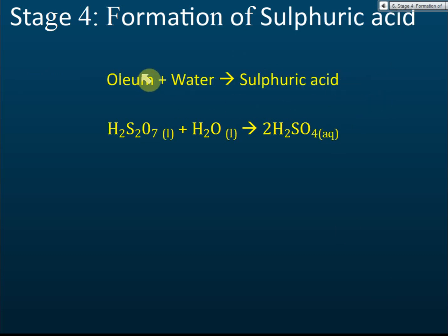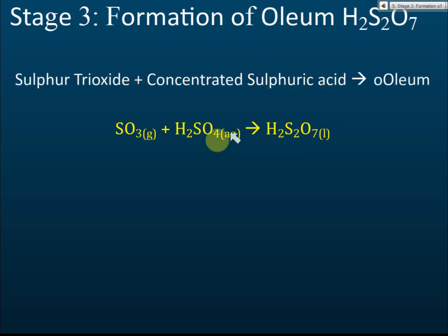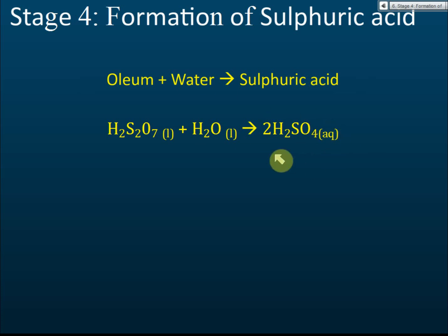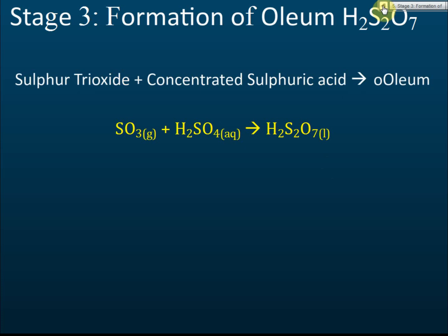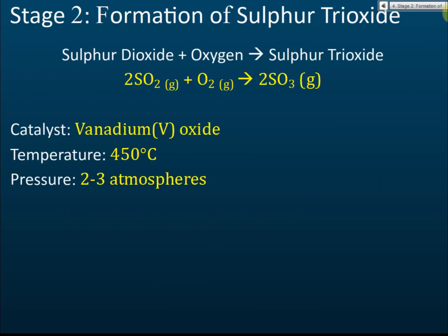In stage four, we dissolve the oleum in water. H₂S₂O₇ dissolved in water gives us sulfuric acid. In the previous process we used one sulfuric acid, and the product is two sulfuric acid molecules — so we use one sulfuric acid to produce oleum, then oleum dissolves in water to give two sulfuric acid. Those are the four stages in the contact process. Stage two is especially important — you must remember the optimum conditions.